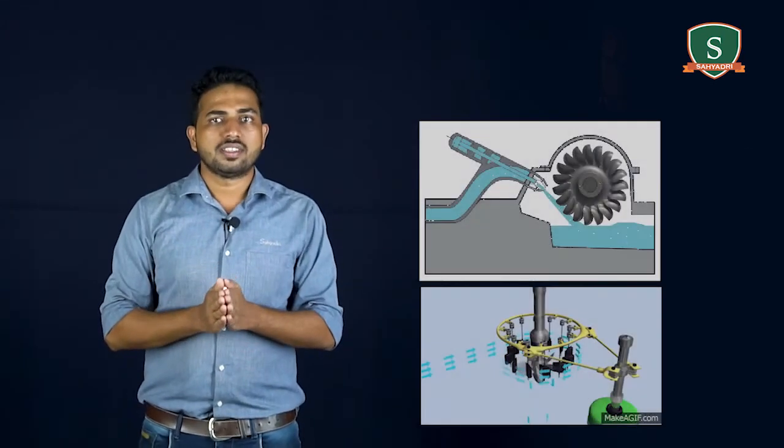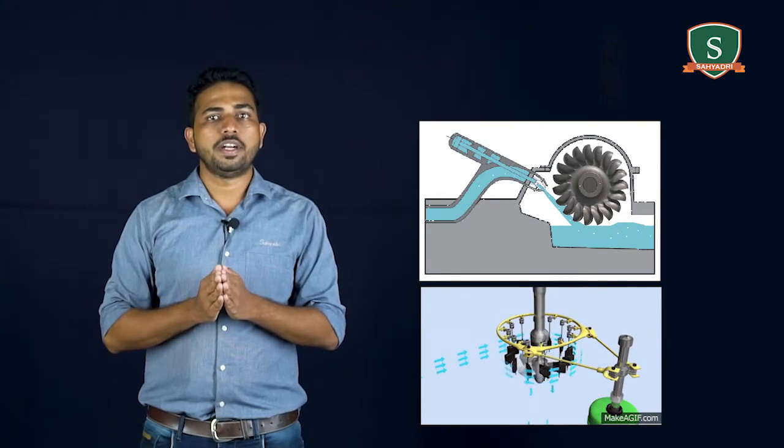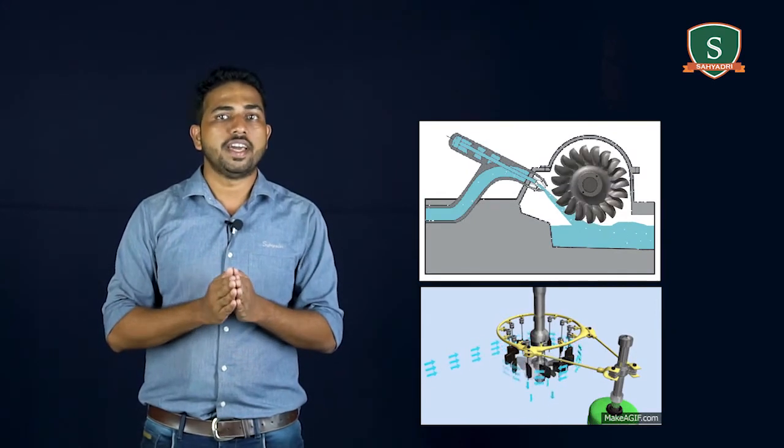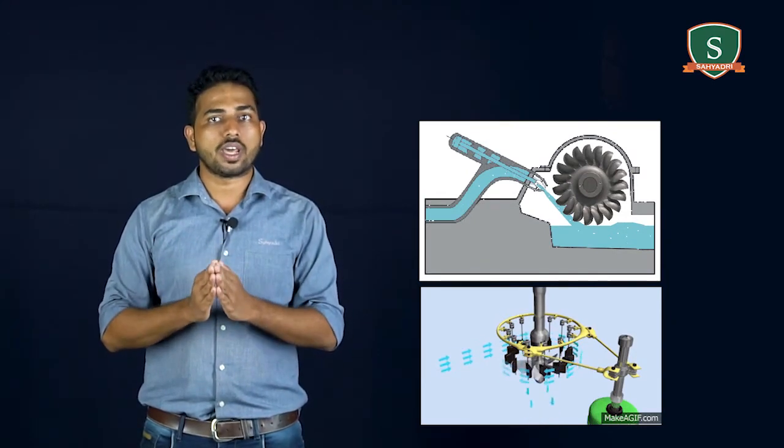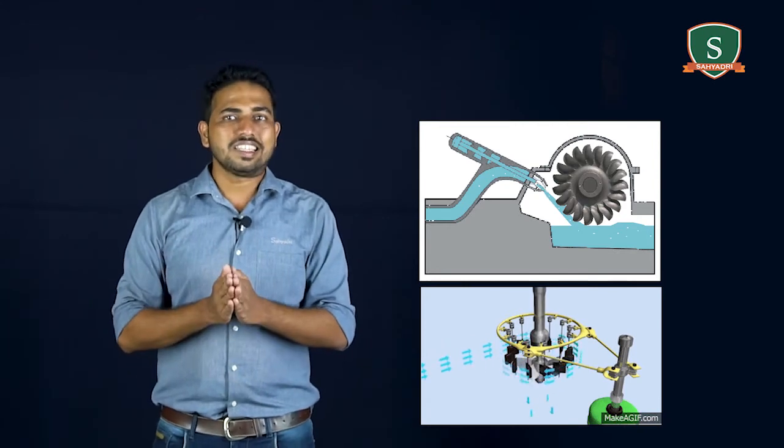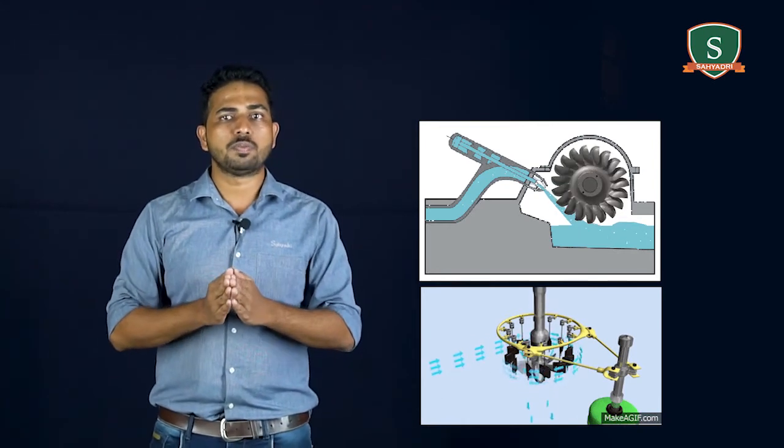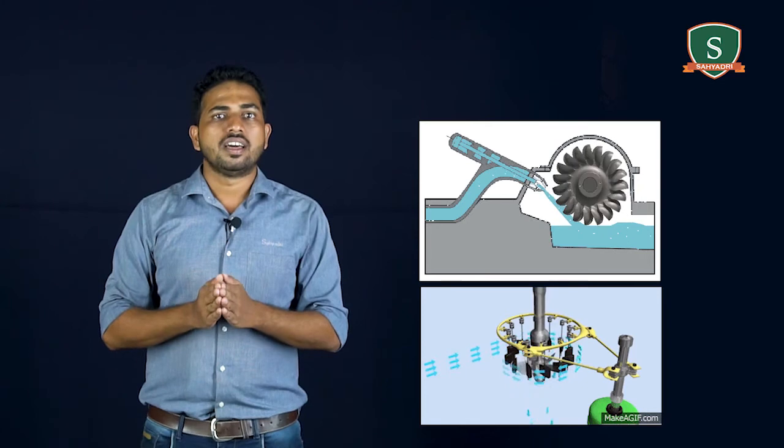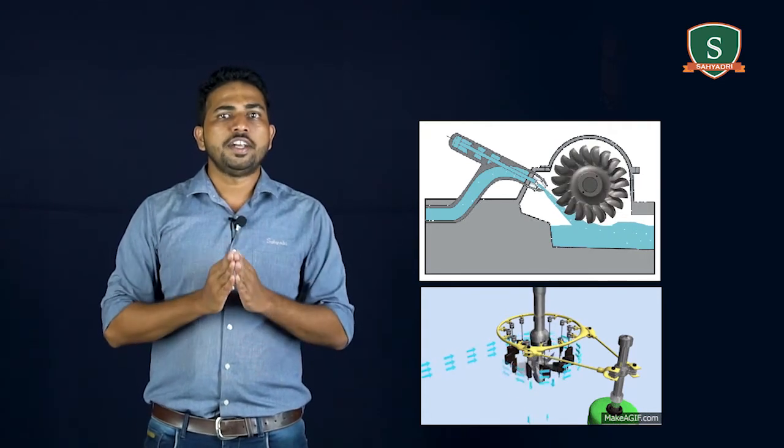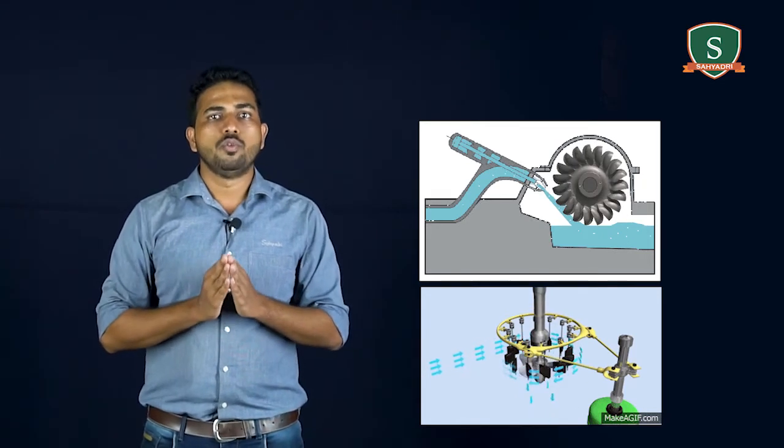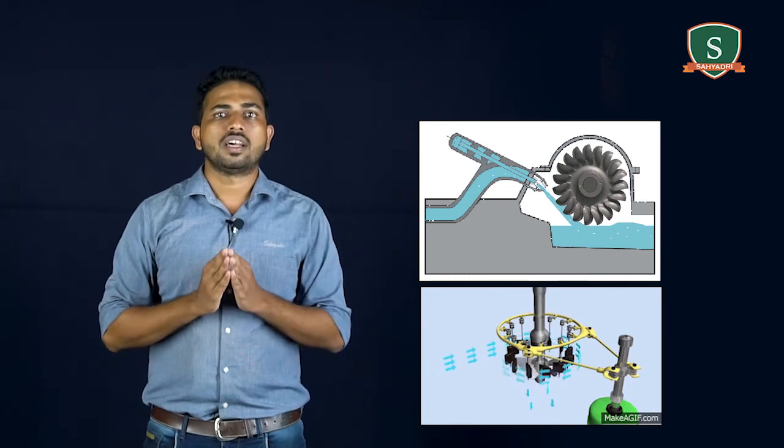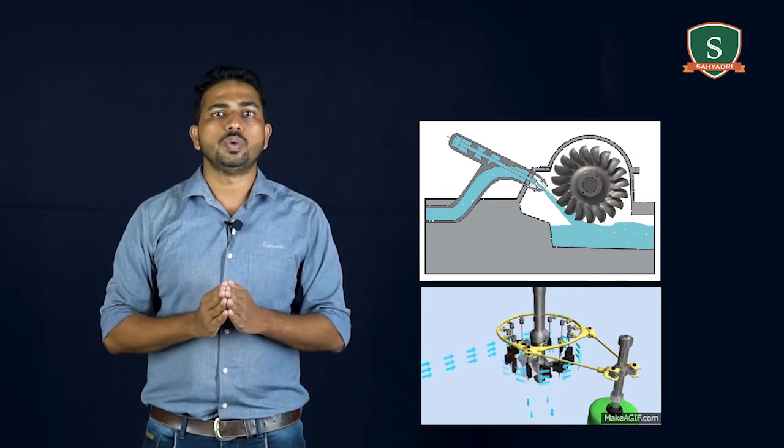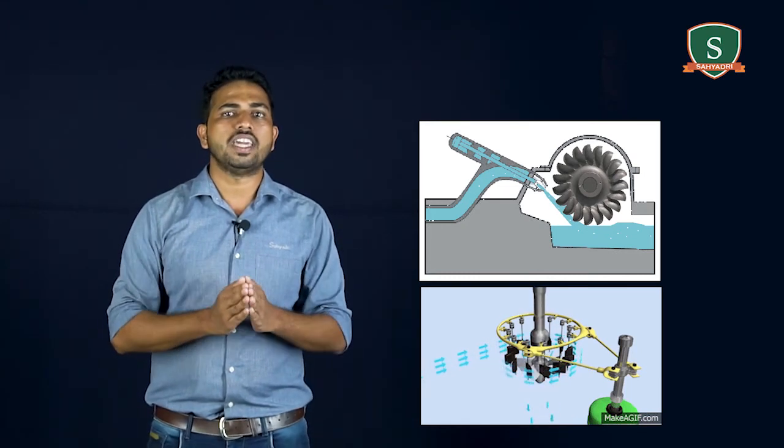The machines whose functioning depends basically on the principle of fluid dynamics are known as rotor dynamic machines. They are distinguished from positive displacement machines in requiring relative motion between the fluid and the moving part of the machine. The rotating element of the machine usually consists of a number of vanes or blades.